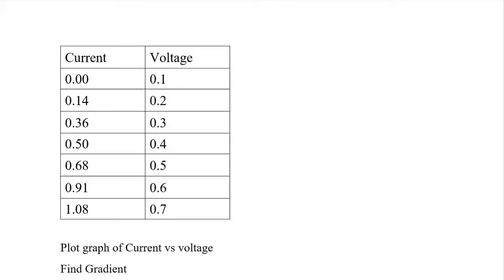Hey everyone, we're going to go through for the final time how to plot graphs. This is going to be really quick and fast since we've done it a few times. So I have a table that has current and voltage for a circuit. My current starts from 0, goes up to 1.08, and my voltage is 0.1 to 0.7.